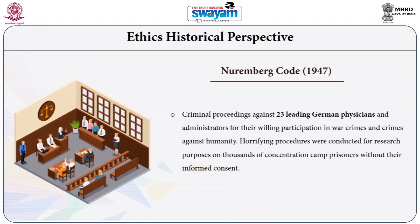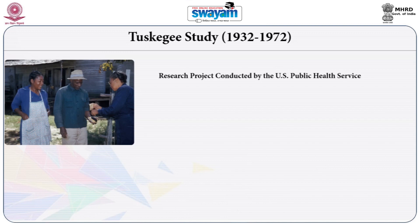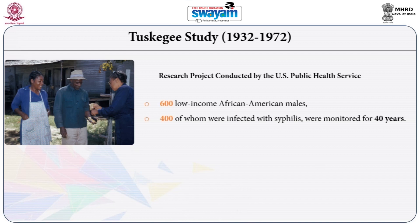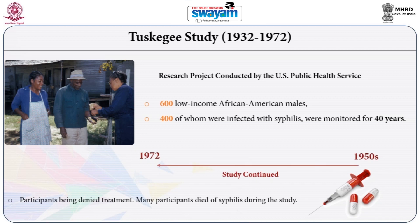Horrifying procedures were conducted for research purposes on thousands of concentration camp prisoners without their informed consent. Another horrifying example is the Tuskegee syphilis study, covering 1932 to 1972, in which as part of a research project conducted by the US Public Health Service, out of 600 low-income African-American males, 400 were infected with syphilis and monitored for 40 years. Free medical examinations were given, but participants were not told about their disease. Even though penicillin became available in the 1950s, the study continued until 1972 with participants being denied treatment.